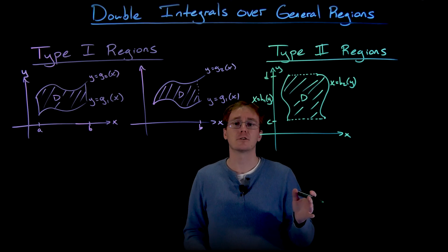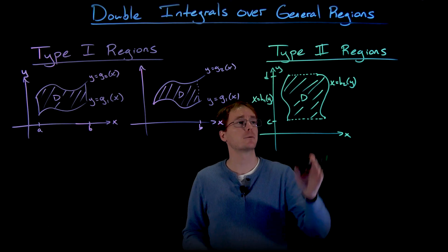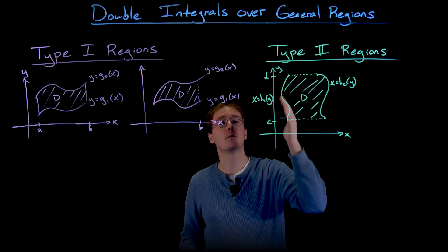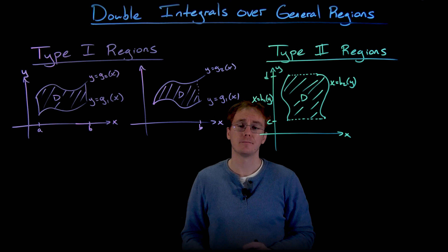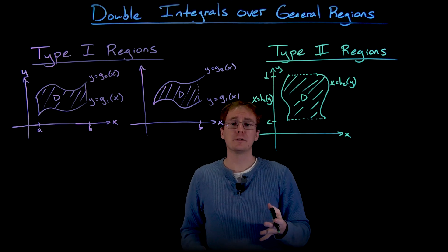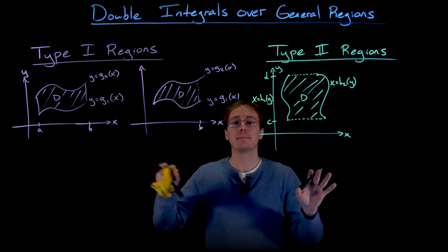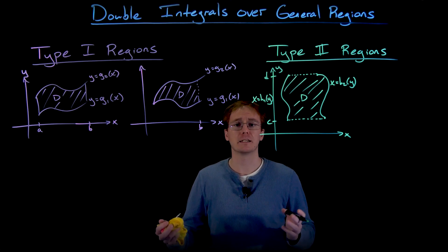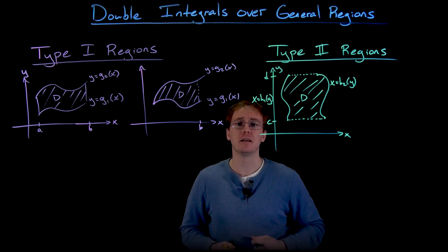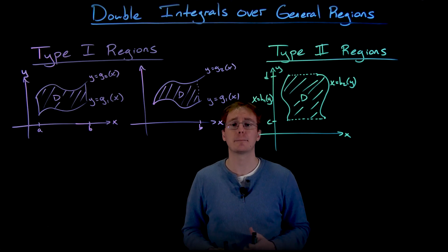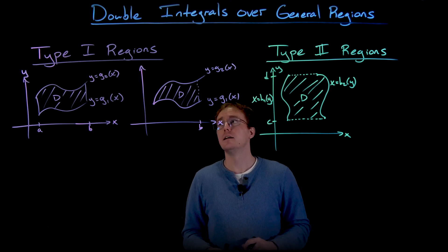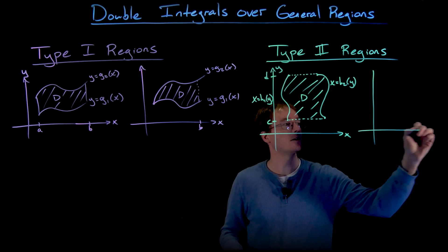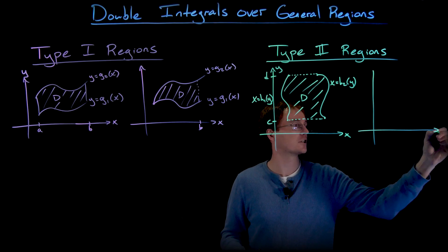The defining characteristic of a type 2 region is that we're bounding our region d by one curve on the right and one curve on the left. There will be regions that can be described as either type 1 or type 2, and the order of integration or other information might help us decide which to use.